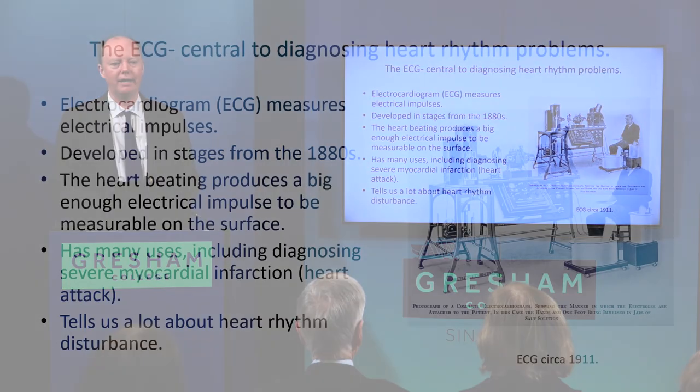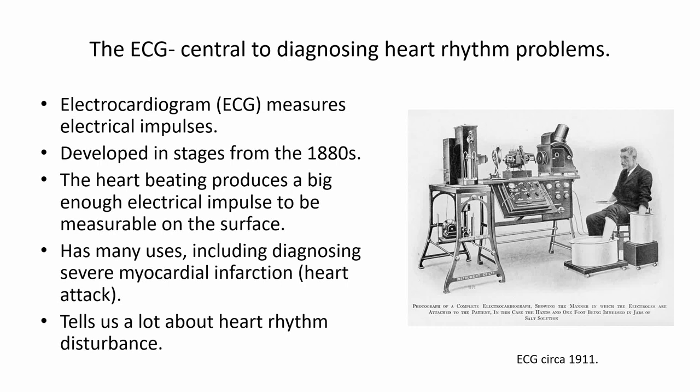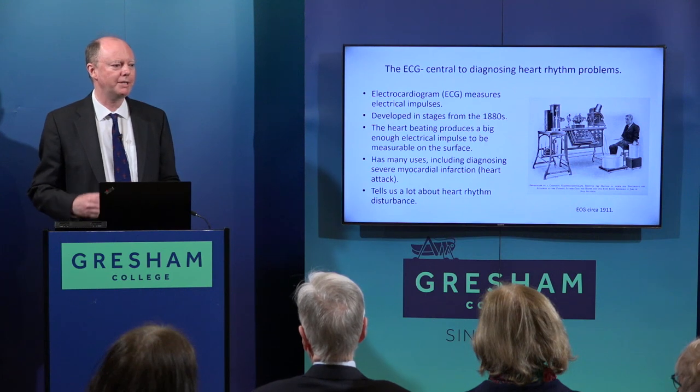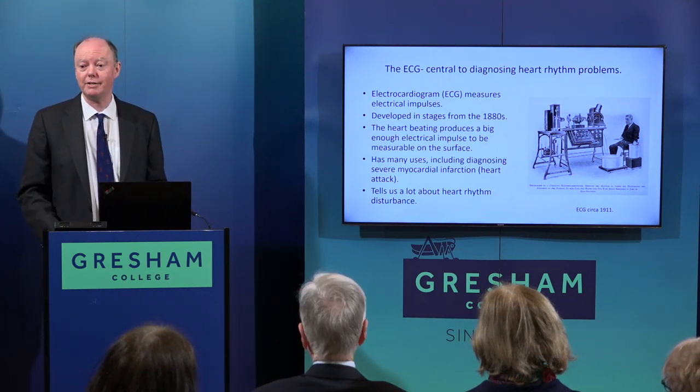Throughout this talk I'm going to refer quite a lot to ECGs — an extraordinarily powerful bit of kit that is fundamentally incredibly simple. All it does is measure the electrical impulses on the outside of your body, but because your heart has electrical conduction happening, you can read it and tell exactly which bit of the heartbeat is occurring at any given point. It was developed back in the 1880s, originally using large pieces of equipment — the one being demonstrated from the 1910s had a gentleman with one leg in a bucket and both hands in a bucket to transmit the electrical signals.